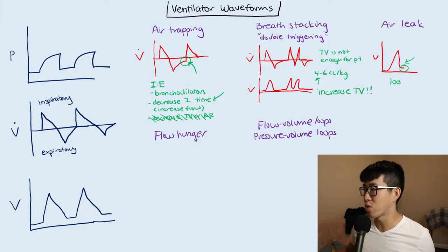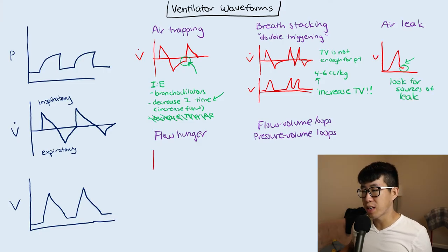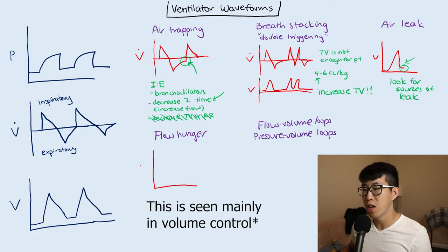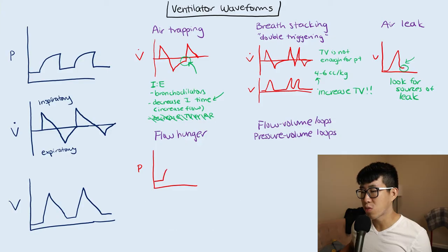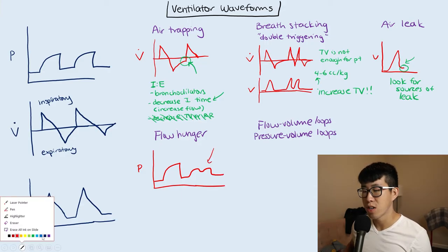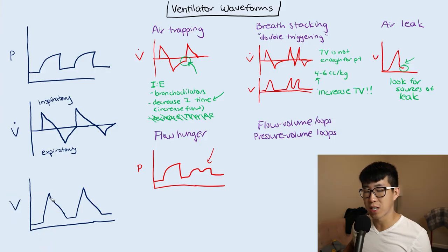So look for sources of leak. Flow hunger is one that I don't typically see that often because in our institution we typically run patients in pressure control. But this is something that you're going to see on your pressure waveform, and instead of being a nice pressure waveform, what you're going to see is kind of this camel bump sign. This is basically because the patient is asking for more flow, so the treatment is to provide additional flow for the patient.